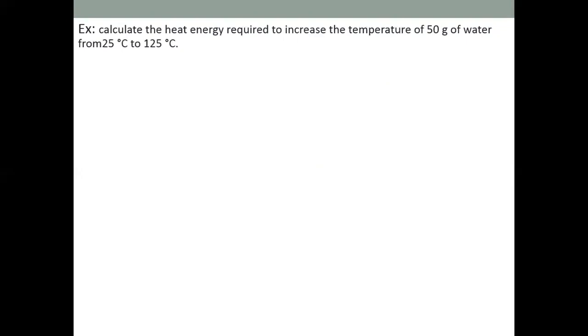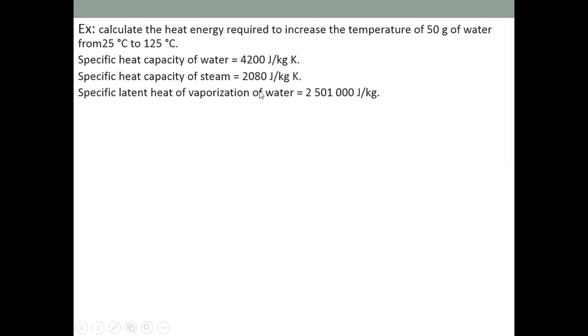Let's look at an example: calculate the heat energy required to increase the temperature of 50 grams of water from 25°C to 125°C. Given: specific heat capacity of water = 4,200 J/kg·K; specific heat capacity of steam = 2,080 J/kg·K; specific latent heat of evaporation of water = 2,501,000 J/kg.